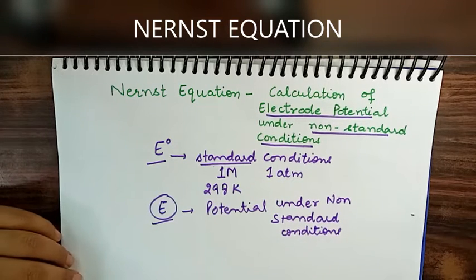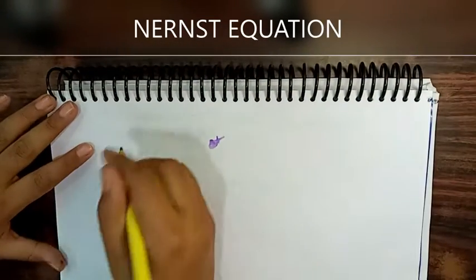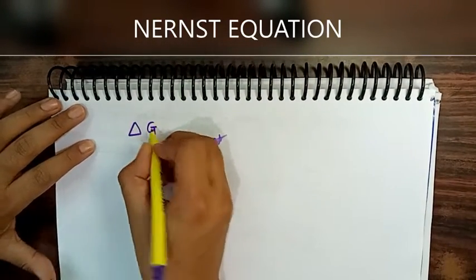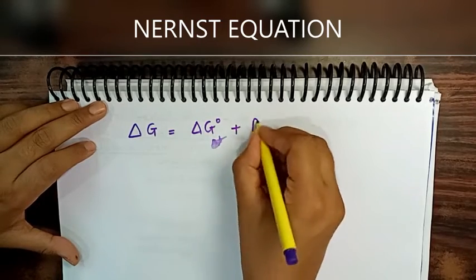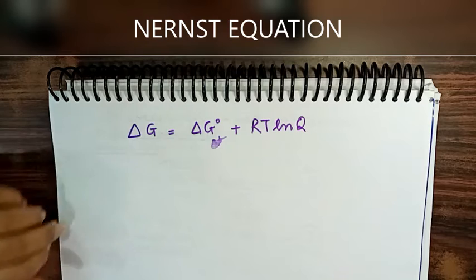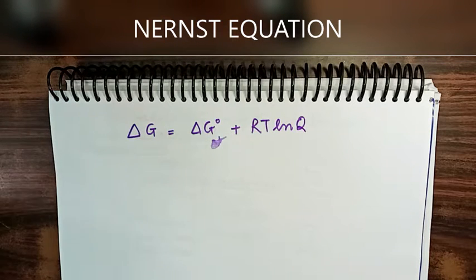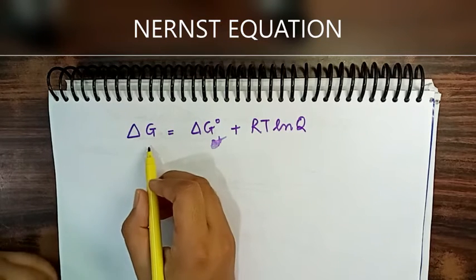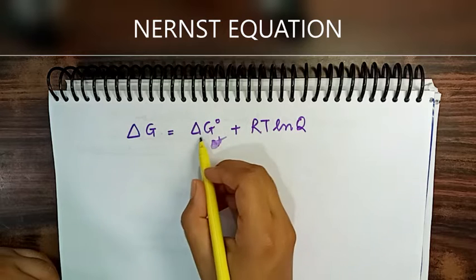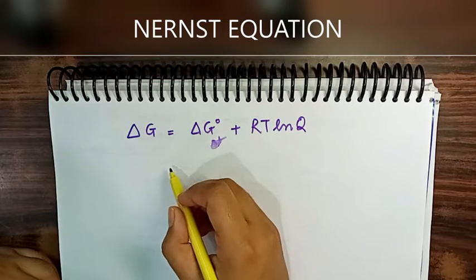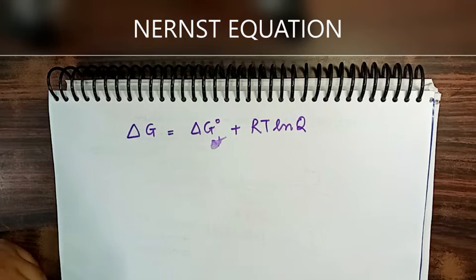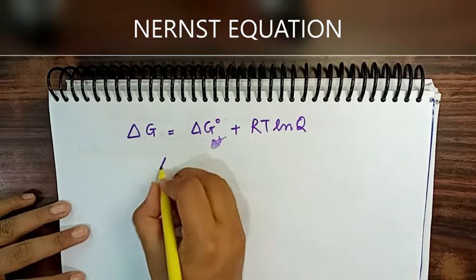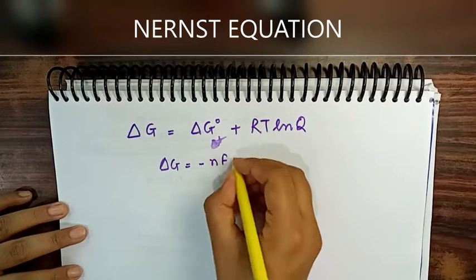For non-standard conditions, we use an equation studied in Class 11 thermodynamics: ΔG = ΔG° + RT ln Q, where Q is the reaction quotient. The relationship between free energy and potential gives us ΔG = -nFE, and under standard conditions ΔG° = -nFE°.